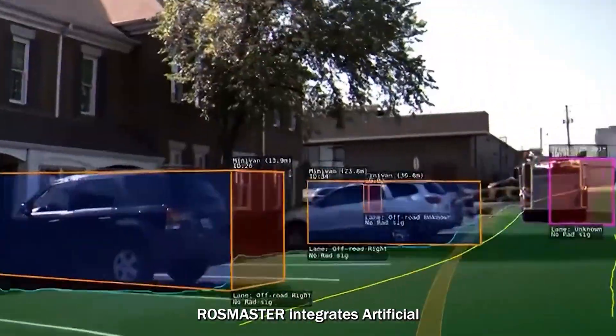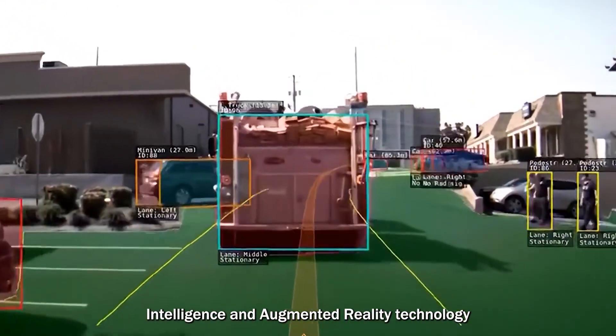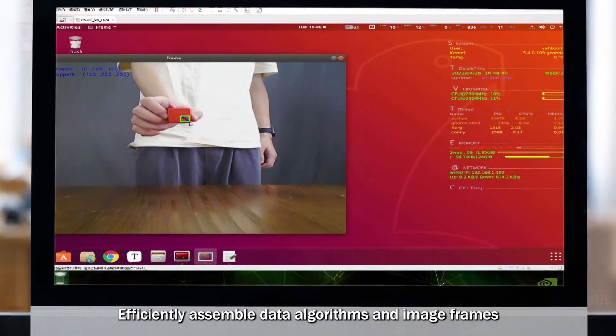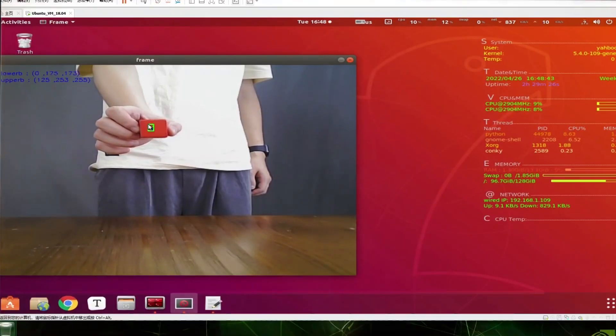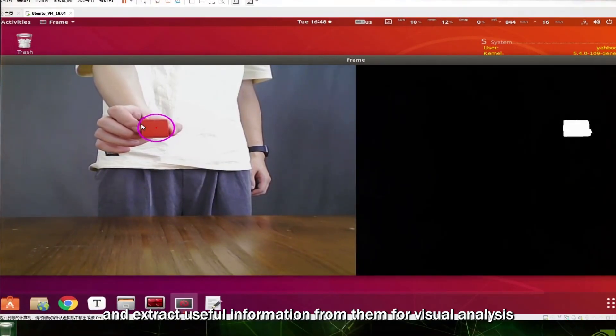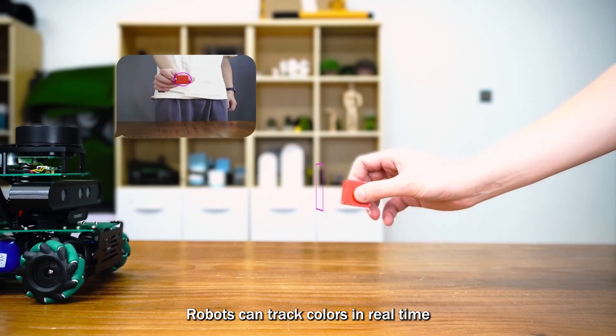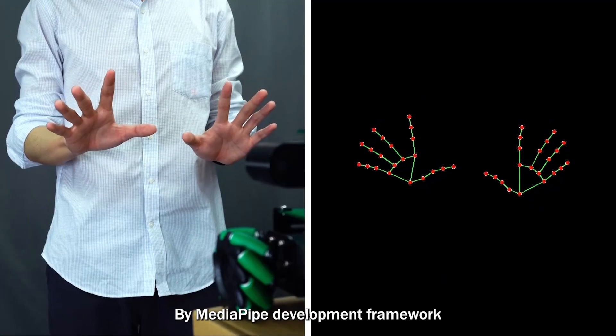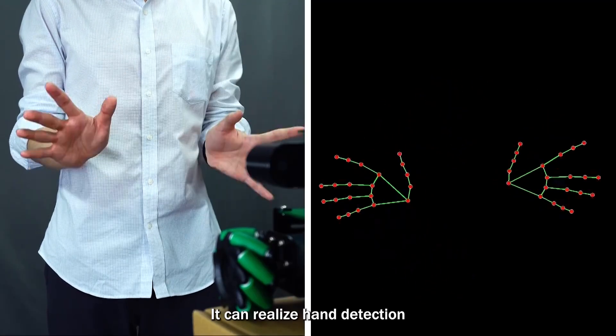Rosmaster integrates artificial intelligence and augmented reality technology to efficiently assemble data, algorithms, and image frames and extract useful information from them for visual analysis. Robots can track colors in real time by Media Pipe development framework. It can realize hand detection, attitude detection, overall detection, face detection, 3D detection, and other functions.